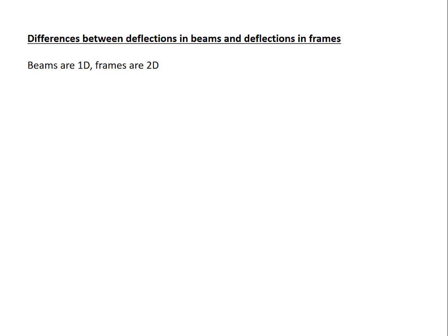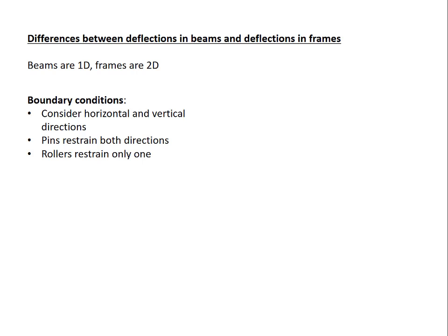What are the implications of this? We'll start with the boundary conditions. Now you need to consider both horizontal and vertical directions. The pins restrain the frame in both directions. The rollers restrain it only in one.